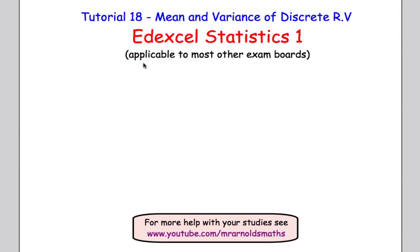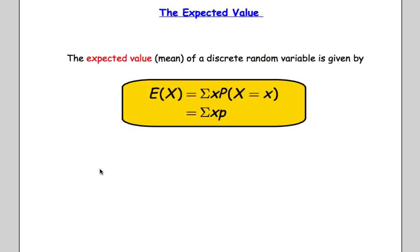Hi there and welcome to tutorial 18 on finding the mean and variance for a discrete random variable. This is for the EdXL S1 A-level module and is applicable to most other exam boards also. If you're looking for further help with your studies, do check out youtube.com/MrArnoldsMaths. Let's crack on straight away.